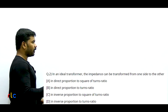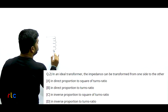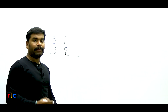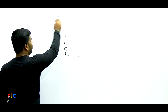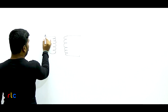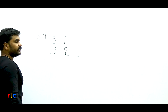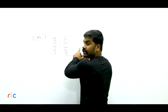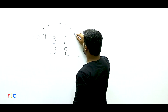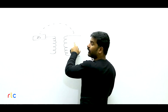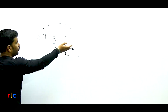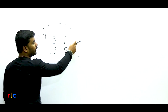In a transformer there are two sides — primary and secondary. We can transform impedances, resistances, and reactances from primary to secondary or secondary to primary. Suppose there is some impedance Z1 on the primary end. If we look from the secondary side, how much will Z1 appear? That is what transforming Z1 to secondary means — making Z1 sit on the secondary winding.